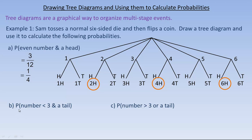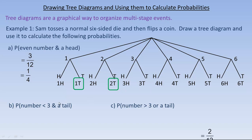For the second probability, what's the chance of getting a number less than three and a tail? Less than three and a tail: a one and a tail would satisfy this, and a two and a tail would also be a number less than three and a tail. That's the only possibilities. You wouldn't include a one-head or two-head because those aren't tails, and all other numbers are not less than three. Three itself is not less than three. So there are only two chances out of twelve, which reduces to one in six — approximately a 17% chance.